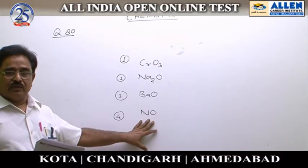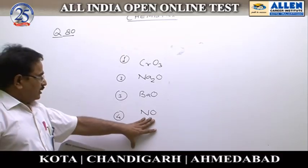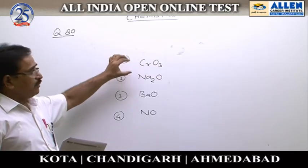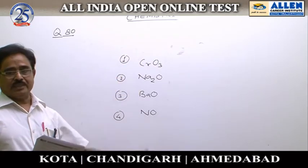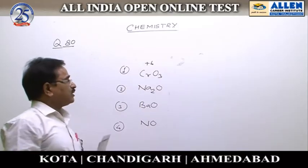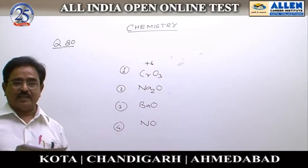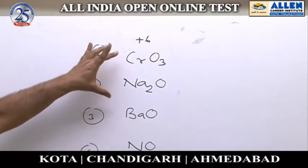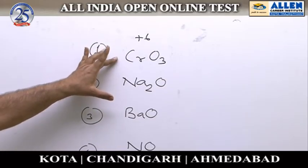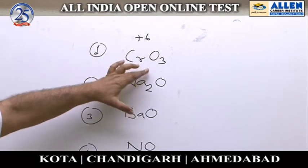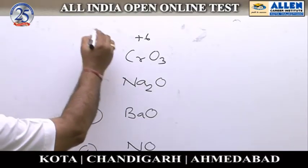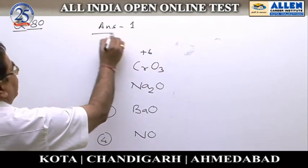In options two and three, Na2O and BaO are metallic oxides, which normally act as basic. In option one, chromium has a +6 oxidation state in CrO3. In higher oxidation states, metal oxides act as acids rather than bases. Therefore, chromium trioxide is the most acidic among the options, so option one is correct.